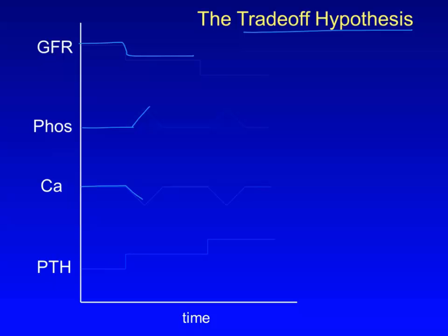Anyway, the low calcium stimulates parathyroid hormone release. PTH corrects the serum calcium and phosphate because it releases calcium from bone and increases its reabsorption by the renal tubules, bringing serum calcium back up to normal. PTH also decreases tubular phosphate reabsorption and increases excretion, bringing the serum phosphate back down to normal. Thus, serum calcium and phosphate return to normal, but at the expense of a higher PTH level — hence the name trade-off.